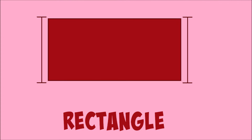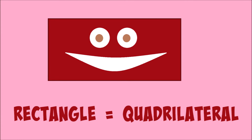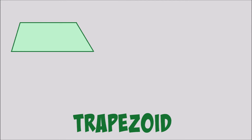A rectangle has two bigger sides that are the same size and two smaller sides which are the same size. A rectangle is a quadrilateral.